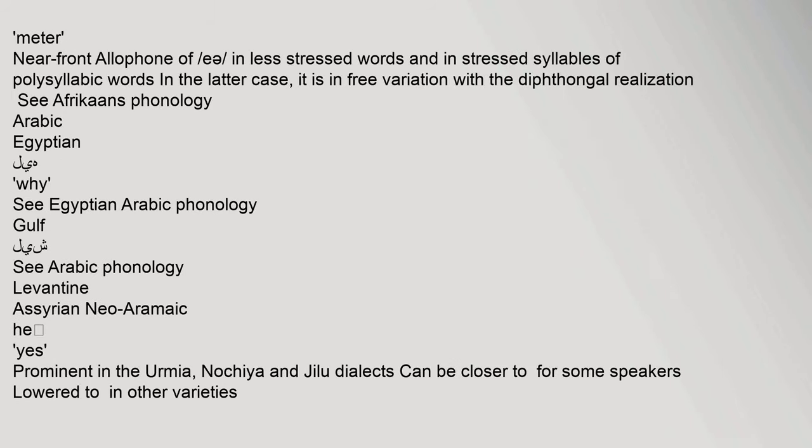Near front allophone of 'e' in less stressed words and in stressed syllables of polysyllabic words; in the latter case it is in free variation with the diphthongal realization. See Afrikaans phonology. Arabic Egyptian: see Egyptian Arabic phonology. Gulf: see Arabic phonology. Levantine Assyrian Neo-Aramaic: prominent in the Urmia, Notchia, and Jilu dialects; can be closer for some speakers, lowered in other varieties.